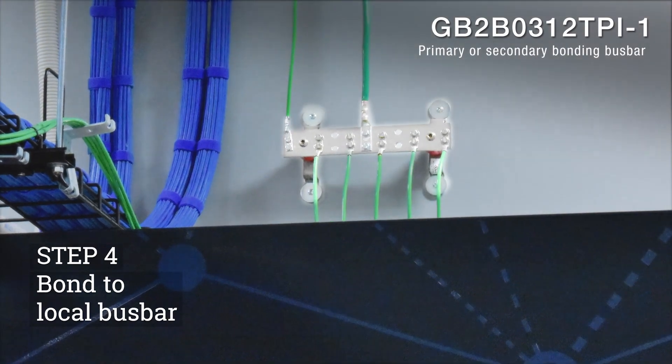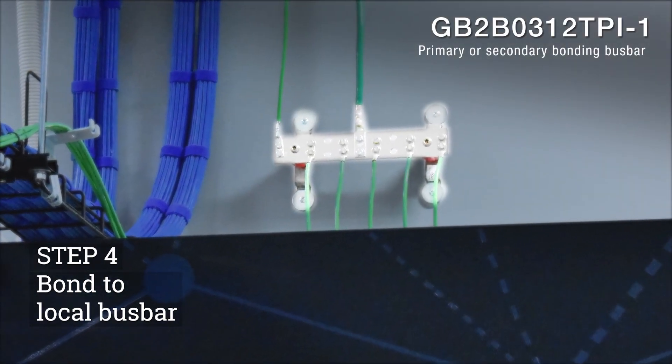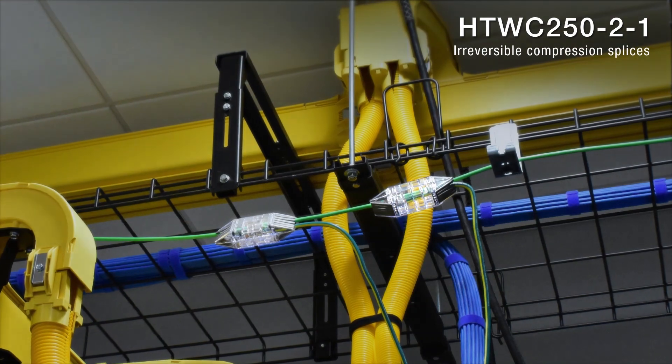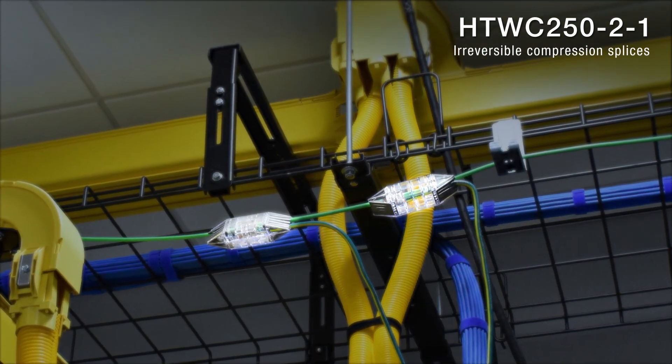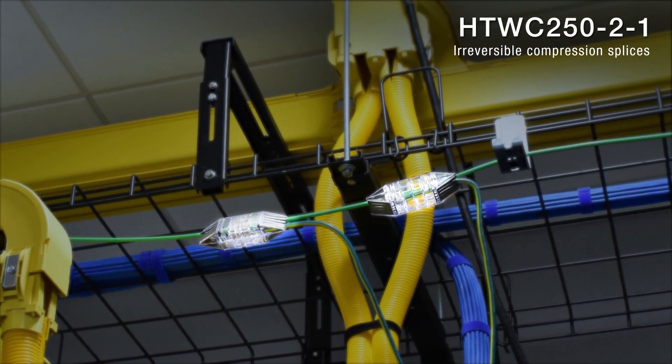Step four is to bond this system back to the room's primary or secondary bonding bus bar. If tapping into a larger run, make sure to use irreversible compression splices and never daisy chain your cabinets or racks together.